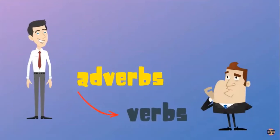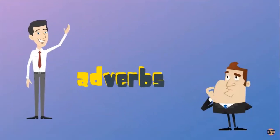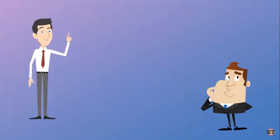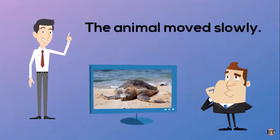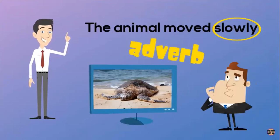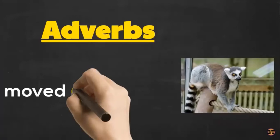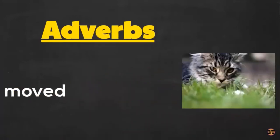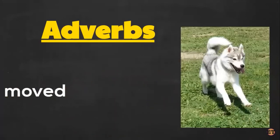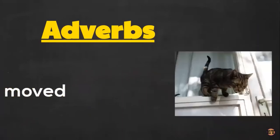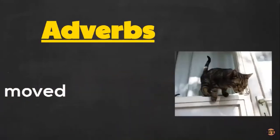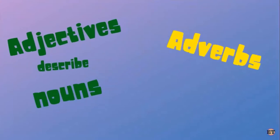Now remember that adverbs are describing words too, but they don't describe nouns, they describe verbs. Makes sense, doesn't it? The animal moved slowly. Slowly is an adverb because it's describing the verb move. Adverbs describe verbs. What other adverbs could we use to describe how an animal moved?